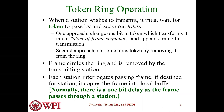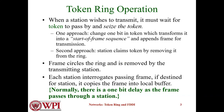One approach is to change one bit in the token, which transforms it into a start-of-frame sequence and appends the frame for transmission. The second approach is the station claims the token by removing it from the ring.